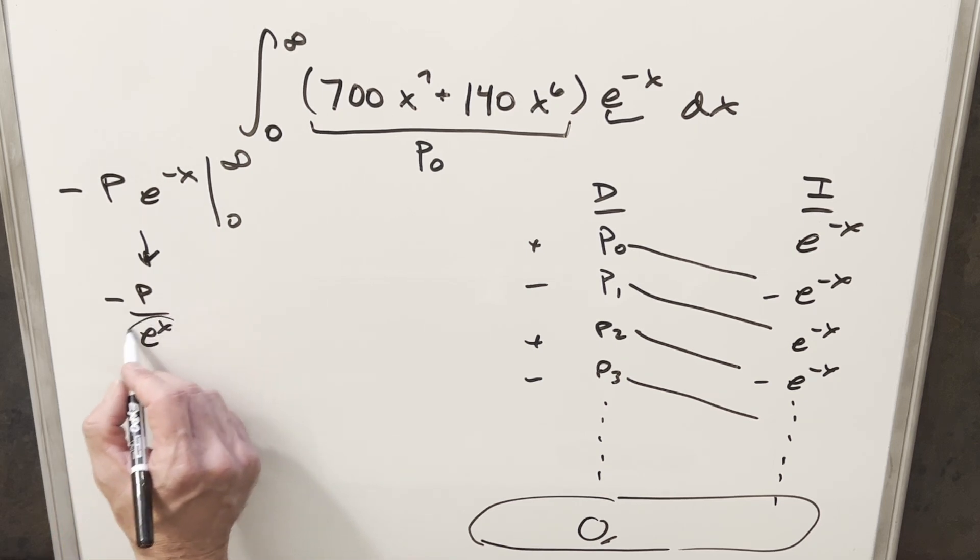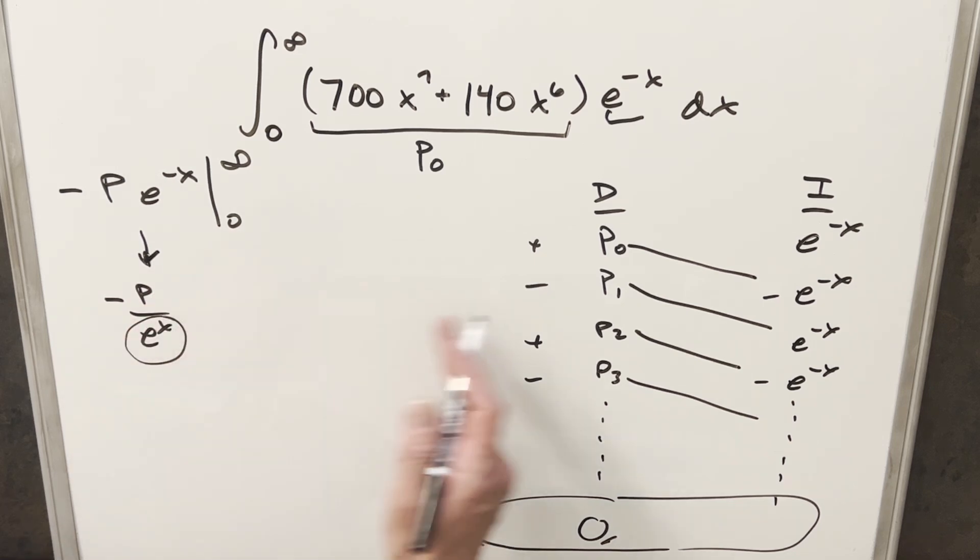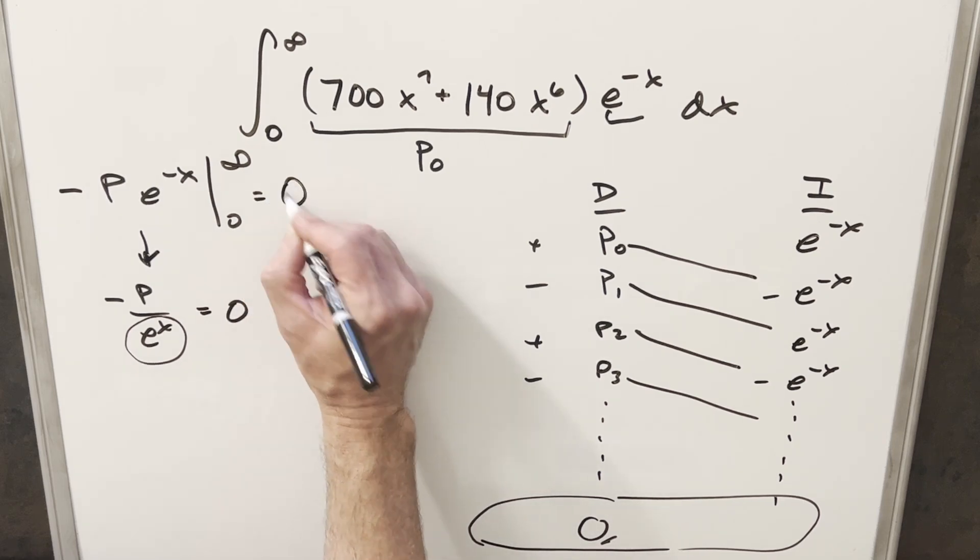And you can see that because we have an exponential here, this part here is growing much faster than whatever this polynomial is. So regardless which polynomial we end up with, this is always going to be going to 0. So our first part of that is just going to be 0.